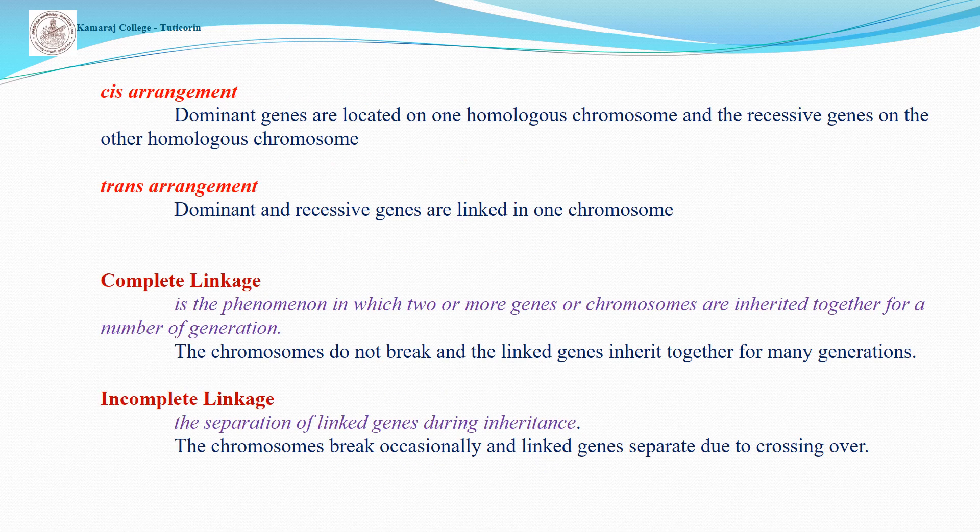Here we discuss the arrangements: cis arrangement and trans arrangement. Cis arrangement means dominant genes are located on one homologous chromosome and the recessive genes on the other homologous chromosome. Trans arrangement means dominant and recessive genes are linked on the same chromosome.